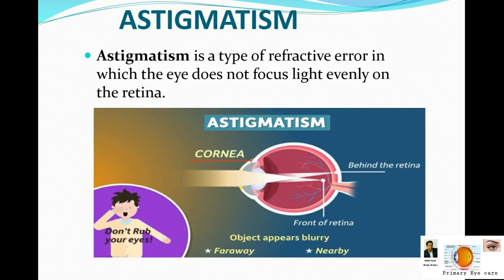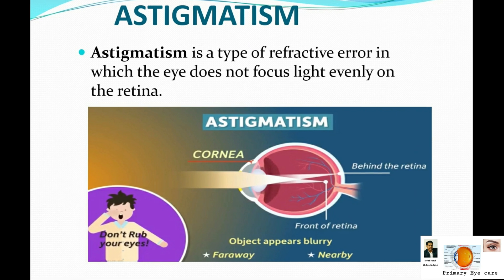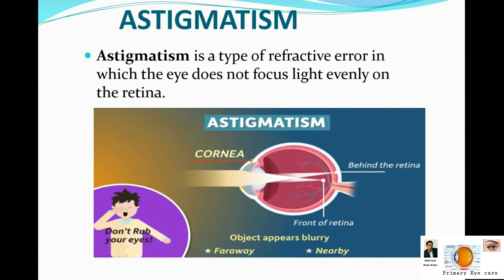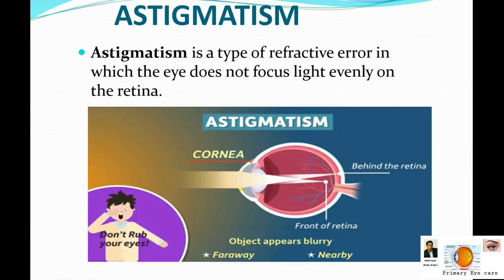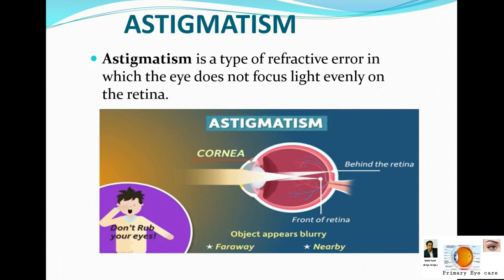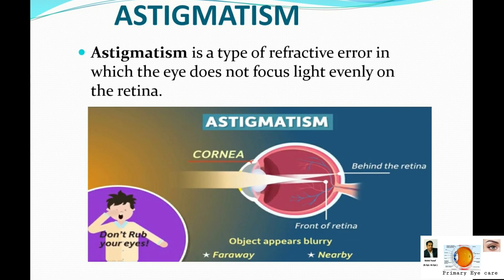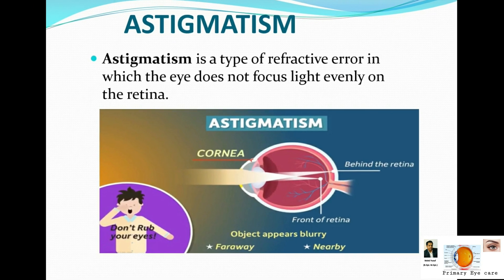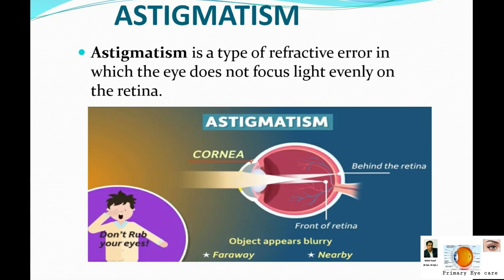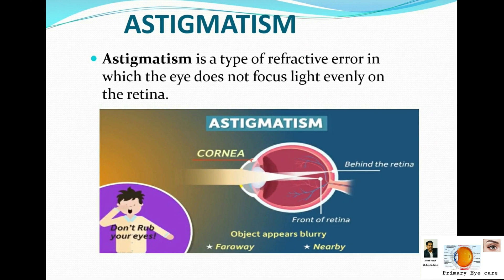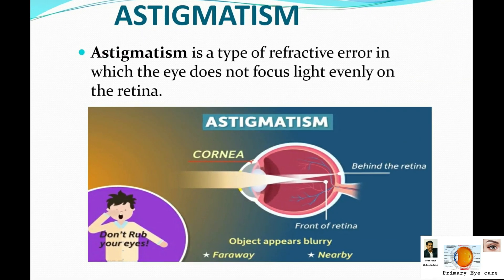Astigmatism is a type of refractive error in which the eye does not focus light on the retina. What happens is that the light focuses on more than two points. Sometimes kids start rubbing their eyes, which may be one of the reasons they induce astigmatism.